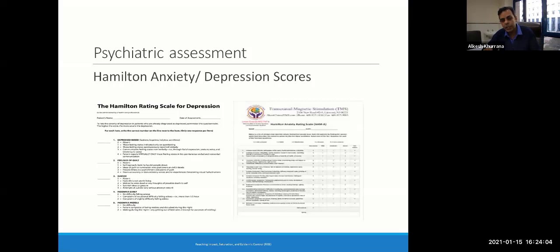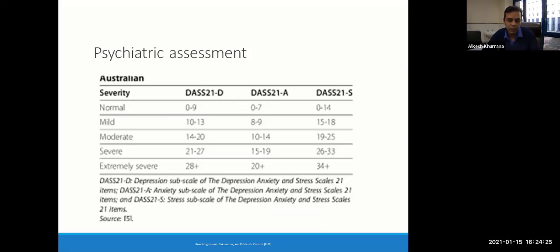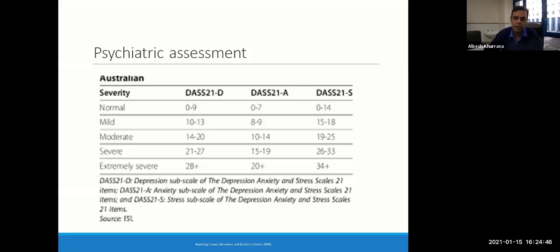Psychiatric assessment is an integral component where you see results within a few weeks. Exercise capacity in terms of 6-minute walk test and psychological assessment show good results in 6 to 10 weeks. Most of the available literature for respiratory conditions has used Hamilton anxiety and depression scores. We follow DASS scores — depression, anxiety, stress scales — measuring at 0 and 6 weeks. Some psychological assessment at baseline and as an outcome parameter must be done to document the success or failure of your rehab program.